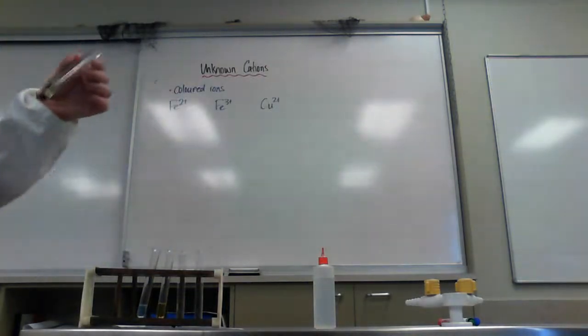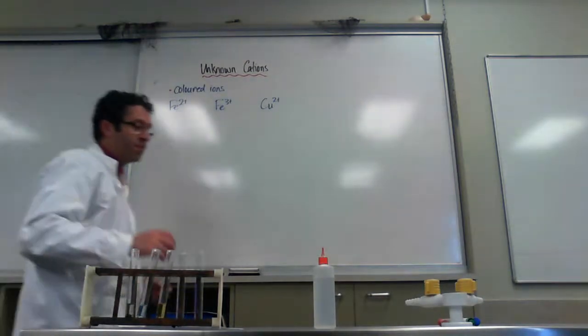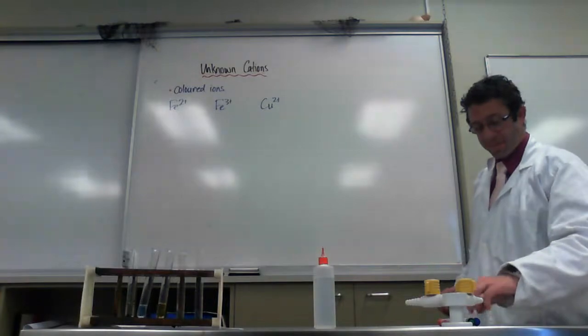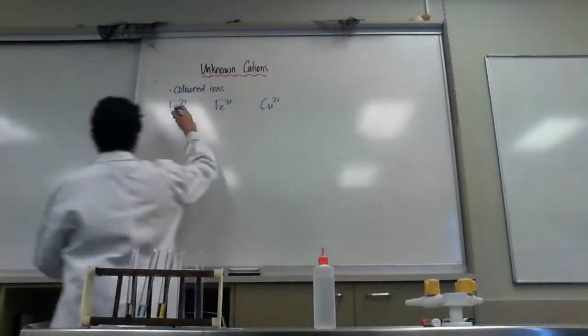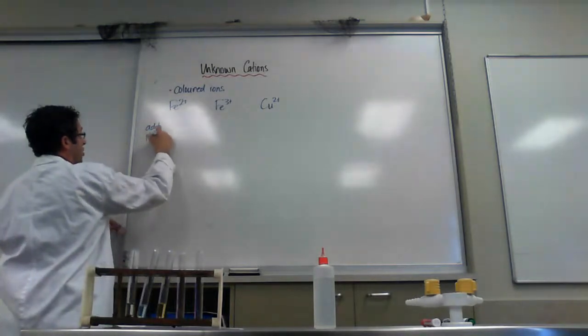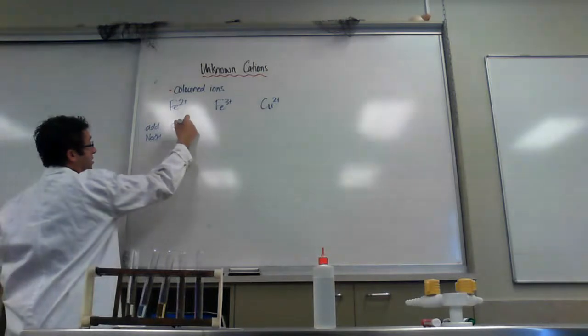And that green precipitate, sort of a forest green color, is what we're looking for to confirm that it is indeed due to the Iron 2+. So if I add NaOH, this gives a green precipitate.